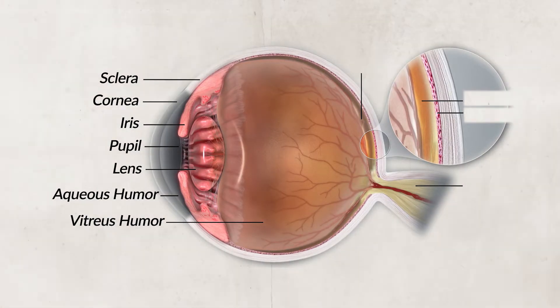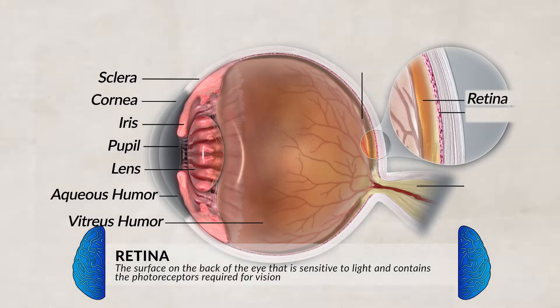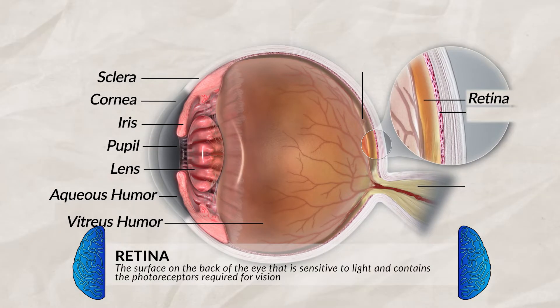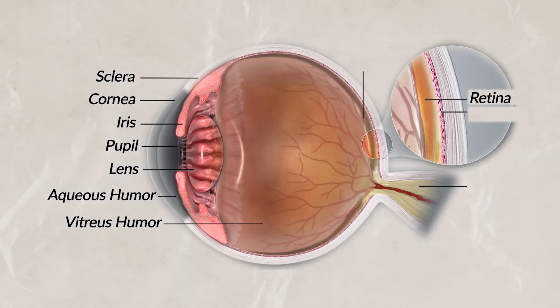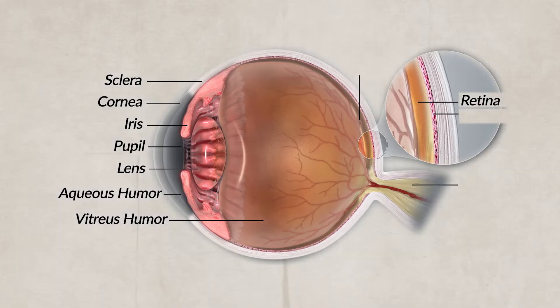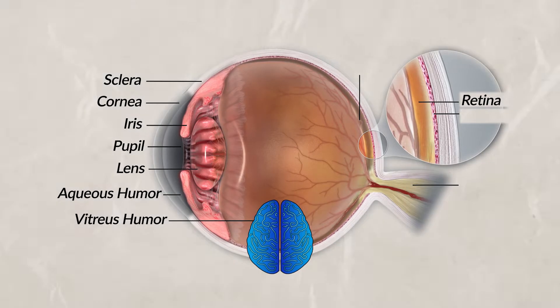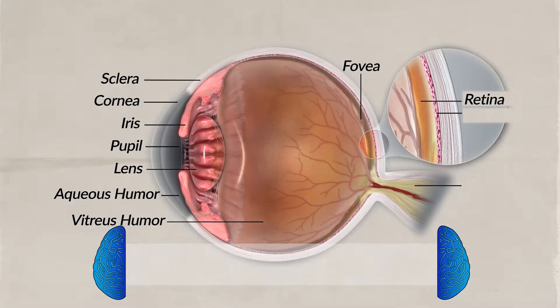When light reaches the back of the eye, it hits a structure known as the retina — think of this as like a screen on the back of the eye. The retina is made up of layers of light-sensitive cells known as photoreceptors, and it covers the entire back of the eyeball. The photoreceptors convert light into neural impulses that allow the brain to process what the eye is seeing. Located on the retina, primarily directly back from the lens, is the fovea centralis, which is a small depression filled with cones.